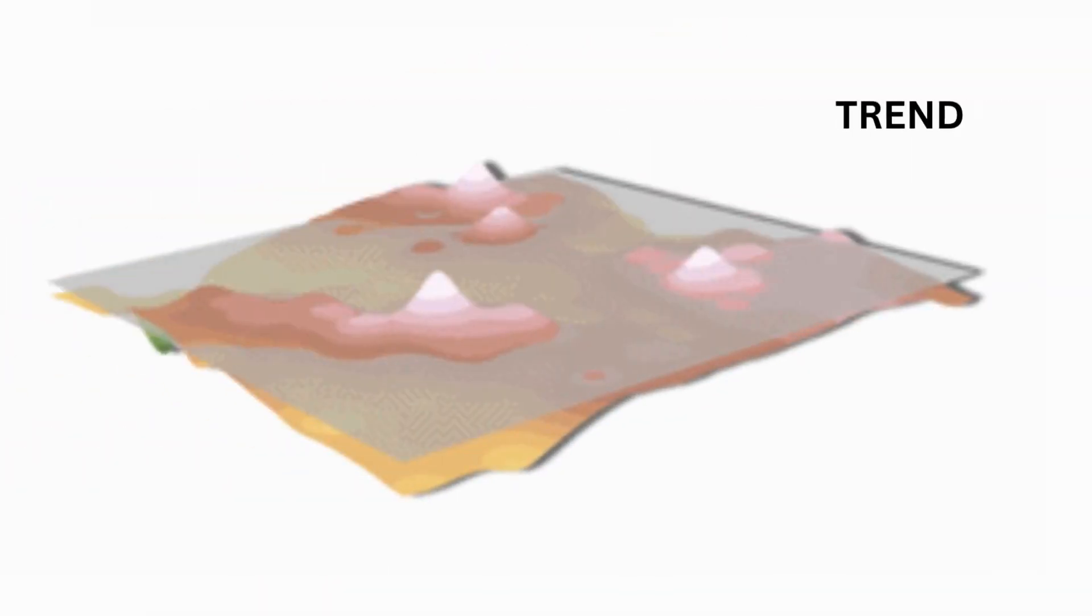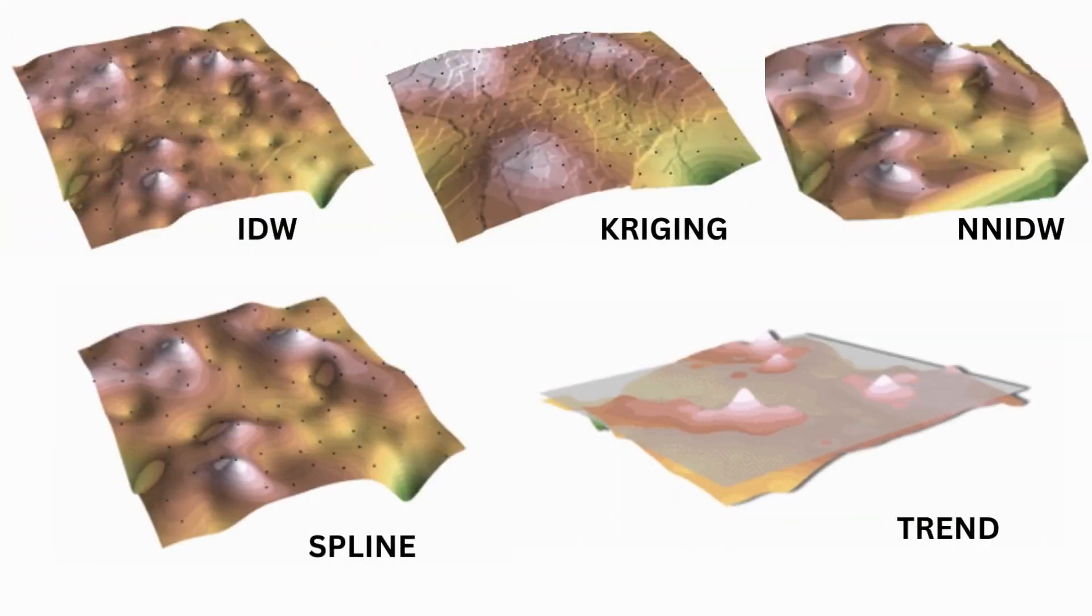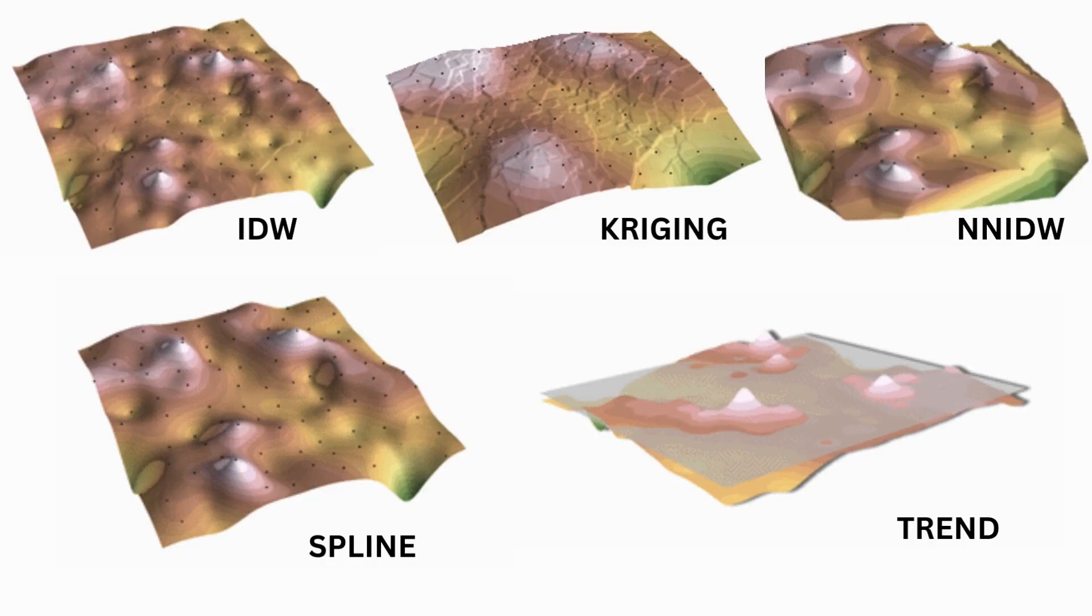For smooth, general patterns, spline or trend may work best, but for highly variable data, IDW or kriging might be a better choice. For example, spline is perfect for data with gentle changes, like pollution or water tables.